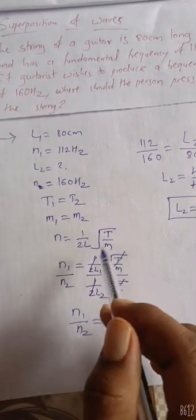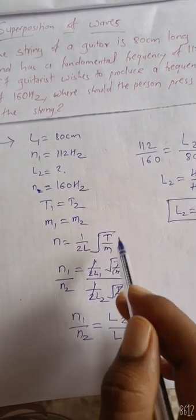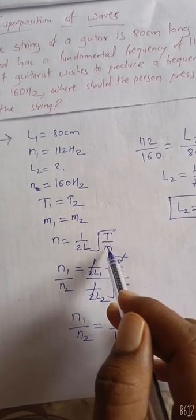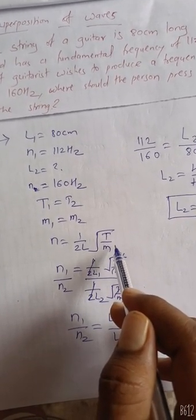n is equal to 1 upon 2L root T upon m, where T is the tension of string and m is the mass per unit length. This is the area of cross section.